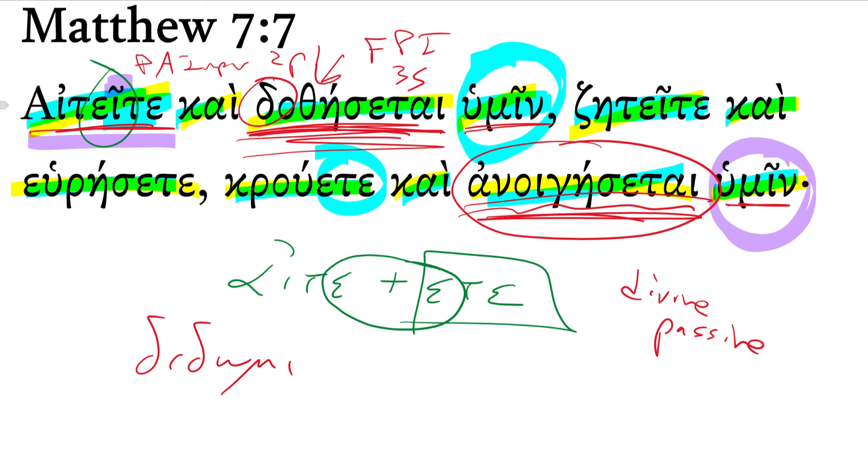This anoigēsetai, you would like there to be a theta there, but some future passives do not. But this is also a future passive indicative, third person singular. In this case, from the verb anoigō, to open, anoigō, to open.